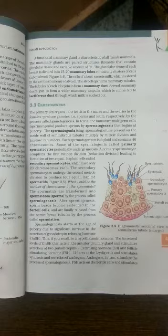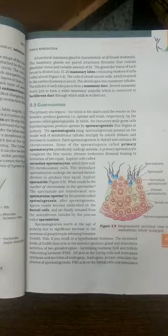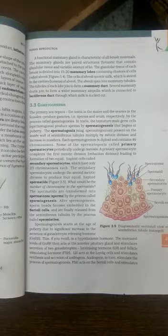There are three things here: spermatogenesis, spermiogenesis, and spermiation. Don't get confused.